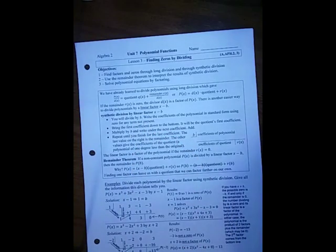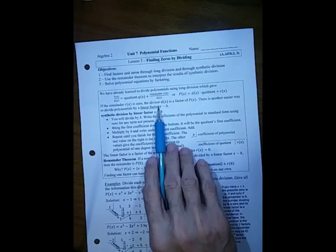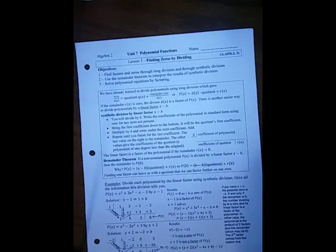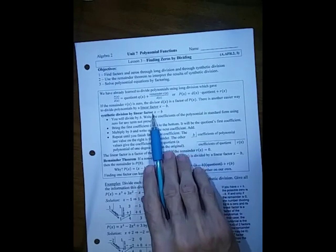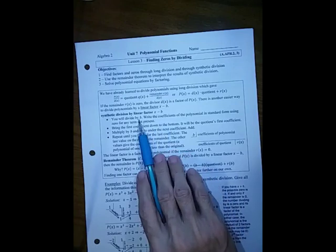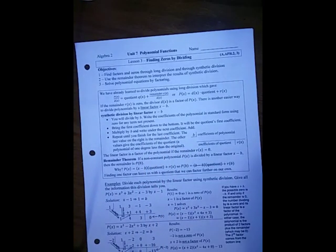The easier way when we have a linear factor is to use synthetic division. If we have something that's not linear, we must use long division. We're going to look for the linear factor and divide by the related zero to it, taking the one with the opposite sign. We write the coefficients of the polynomial in standard form. Whatever terms are missing, you must put a zero for the missing coefficient.